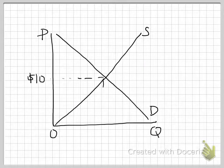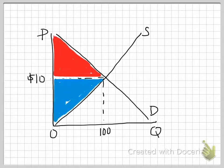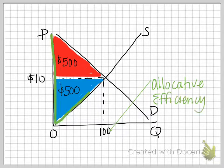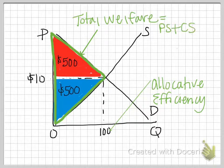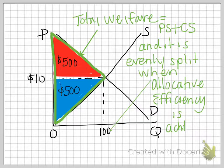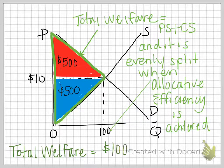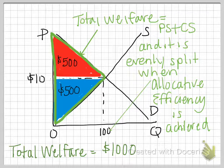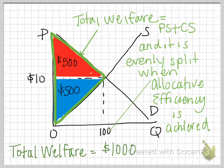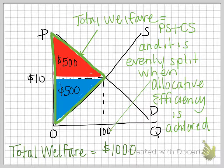Let's take a look at it all together. On this graph, consumer surplus is shaded in red with a value of $500, producer surplus is shaded in blue with a value of $500, and I outlined it in green to indicate total welfare — the entire area of consumer surplus plus producer surplus. Total welfare equals $1,000. In a perfectly competitive market graph such as this one, the producer and consumer surplus are always evenly split. We can also say that when we're at allocative efficiency in future graphs, producer surplus and consumer surplus will be evenly split.